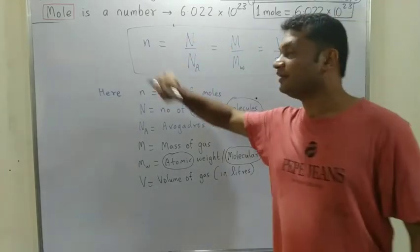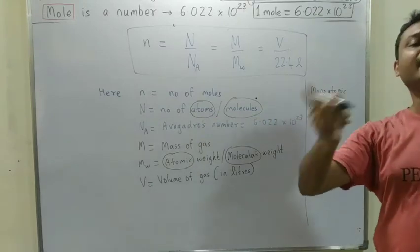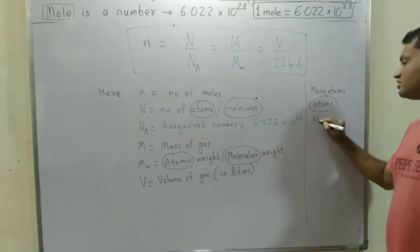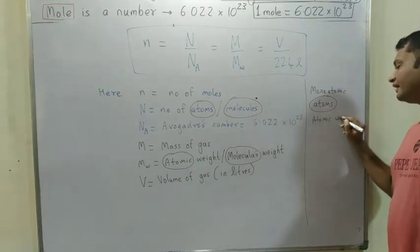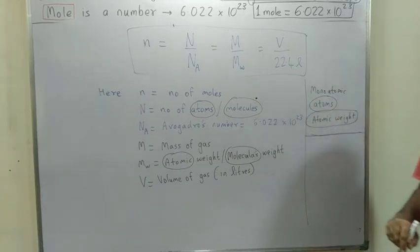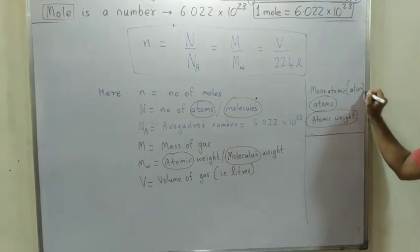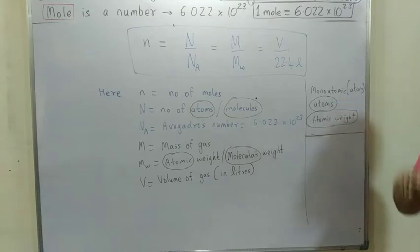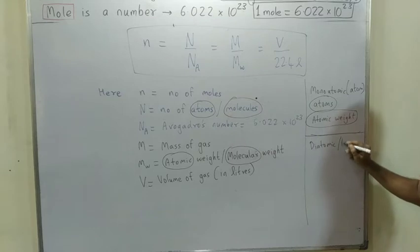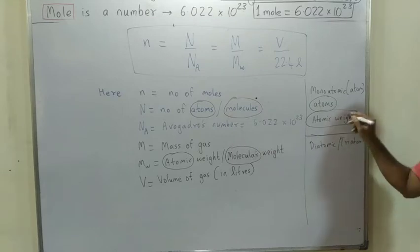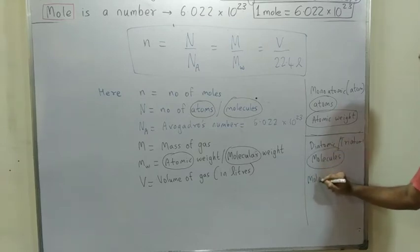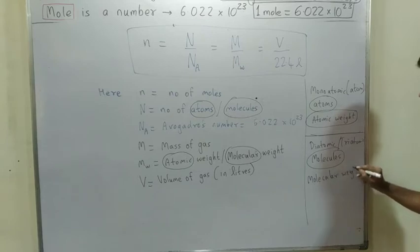For example, helium, krypton, argon, xenon, radon — these are monoatomic gases. In that case we will consider atoms, and we will take atomic weight. Monoatomic means atom, so we consider atomic weight and number of atoms. If it is diatomic or triatomic, then we will consider molecules and molecular weight.